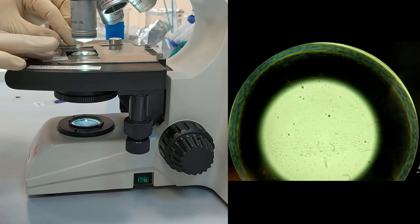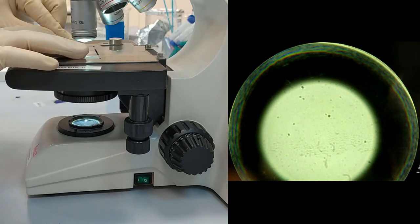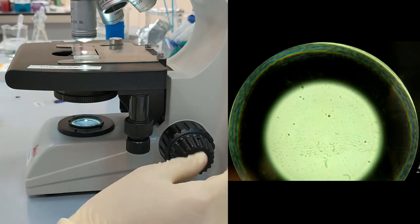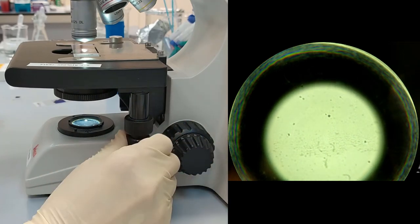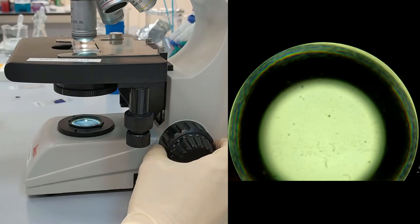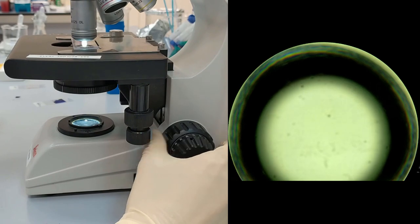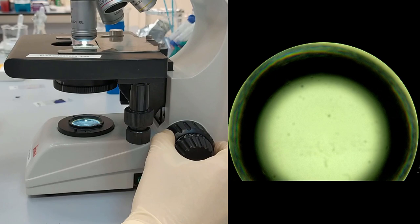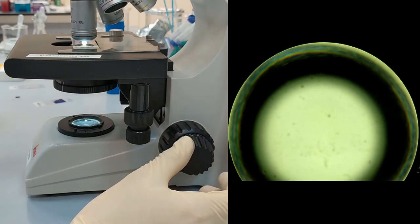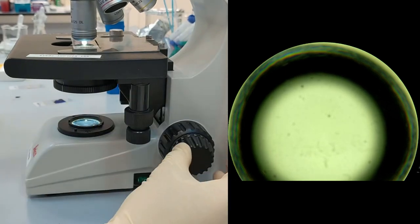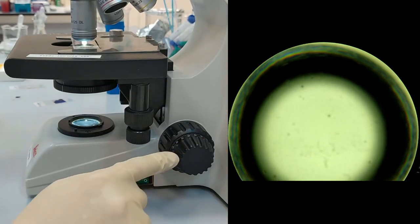Place this drop beneath the objective and under the control of your eyes, we start elevating the stage. When the objective and drop touch each other, using the big knob, we go a little lower and then start working with the small knob.